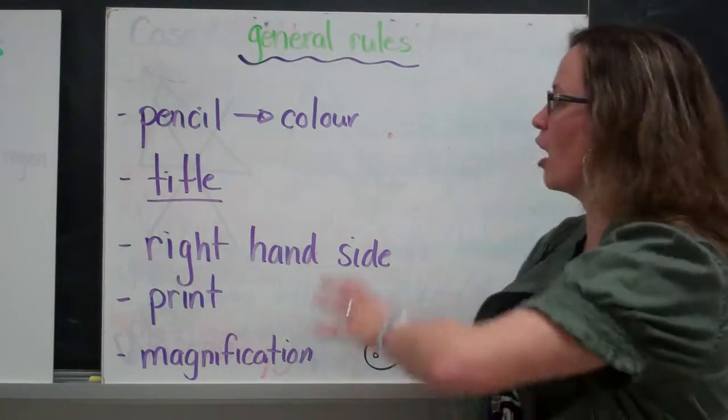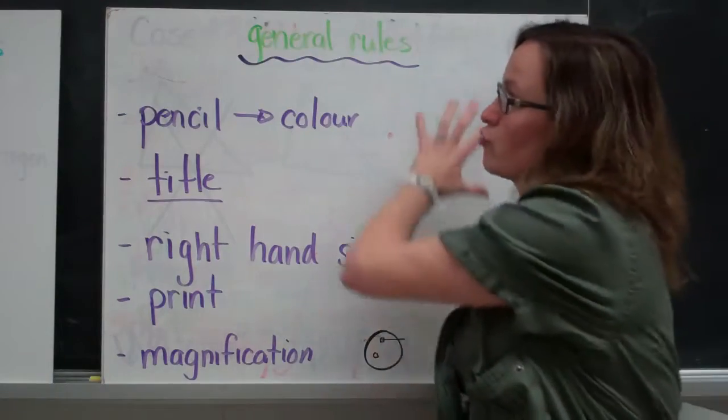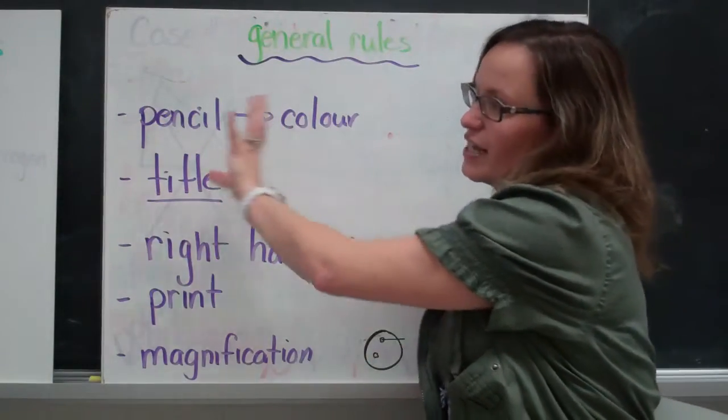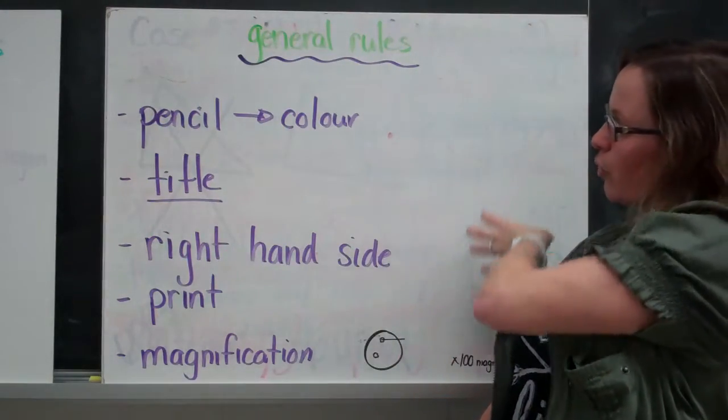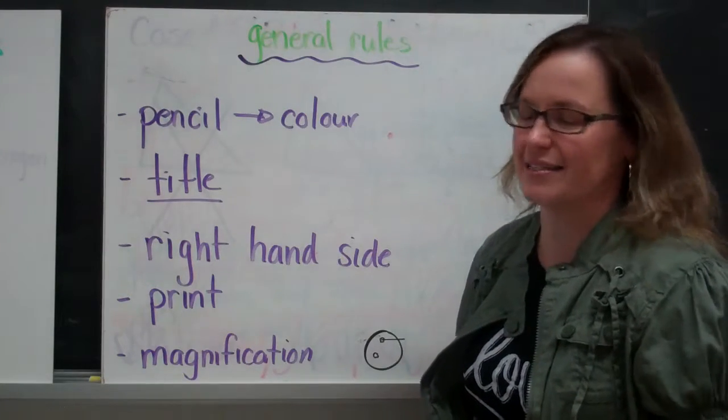All of your labels should be on the right-hand side. So your drawing should be in the center to the left and your labels should all be on the right-hand side of the page.